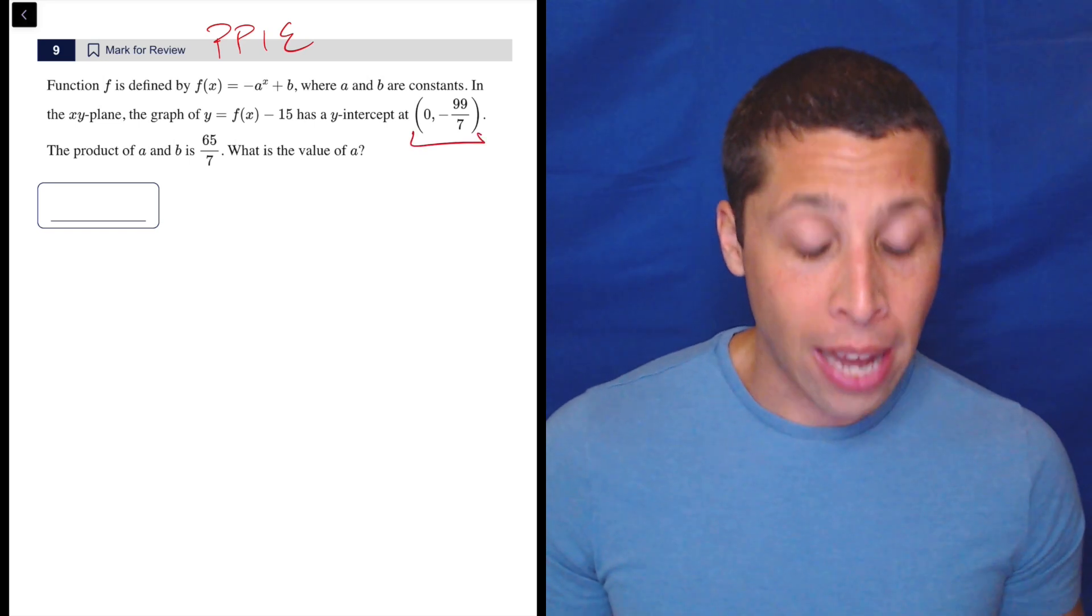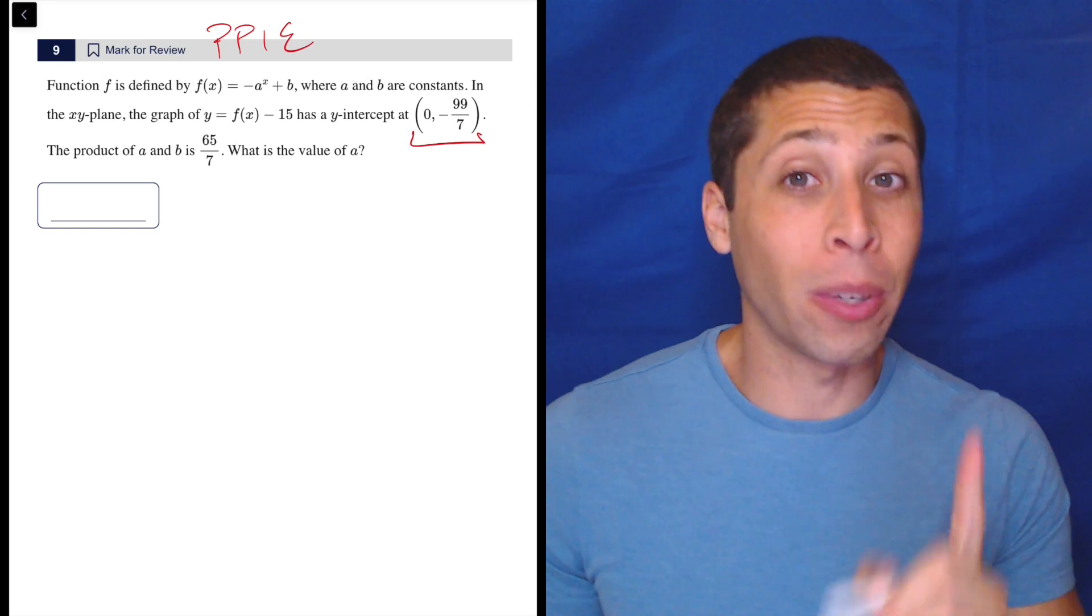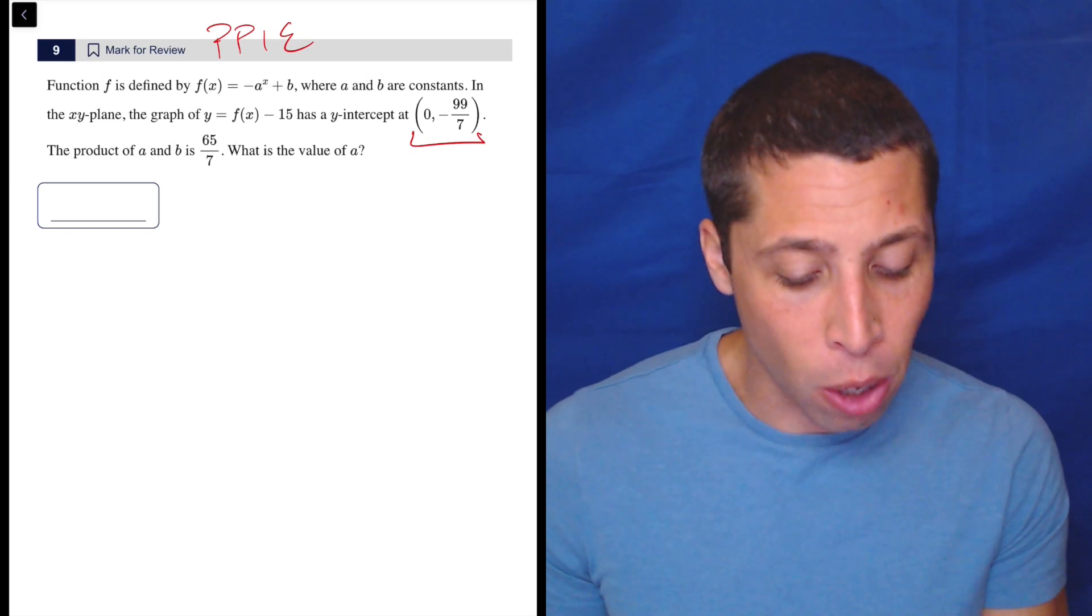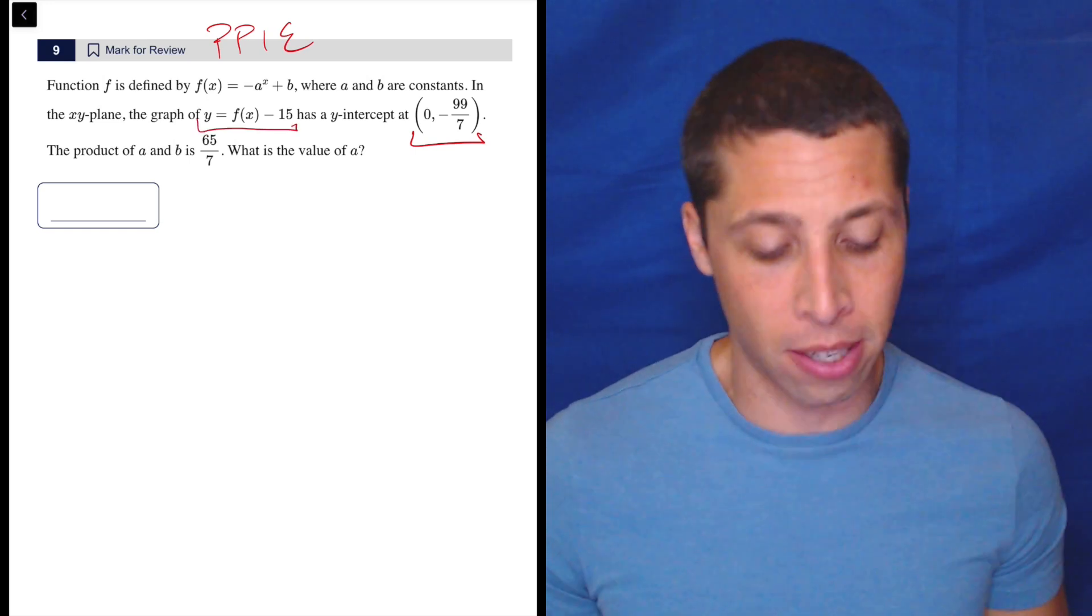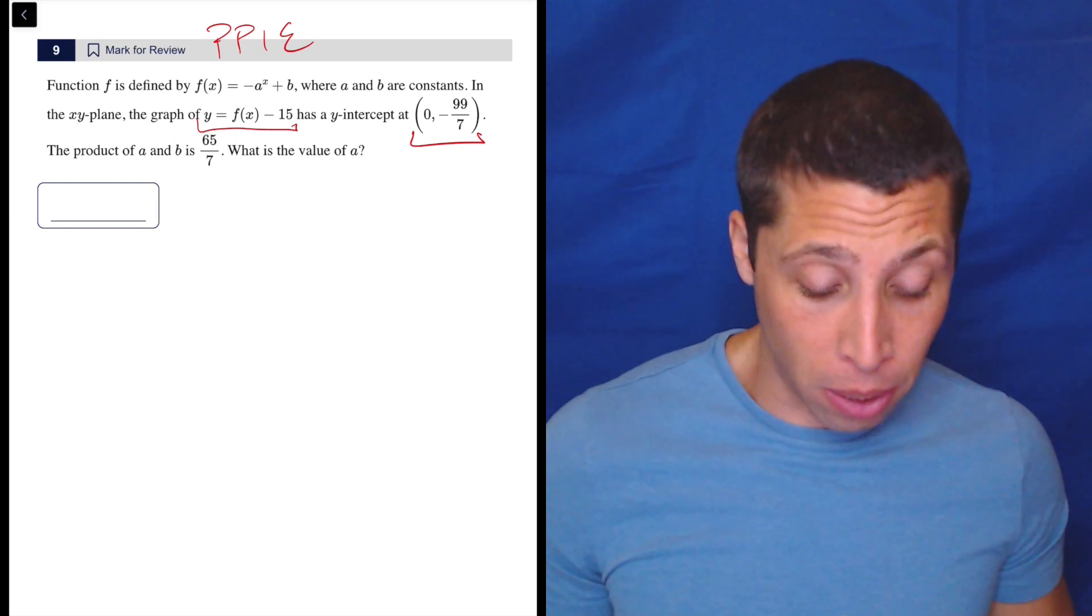So I clearly have a point and I clearly have equations. Now, be careful though. I need to make sure I match the point with the correct equation. And so that does not go with the F(x). It goes with this equation that has a y-intercept. So I'm still going to plug it in pretty blindly.